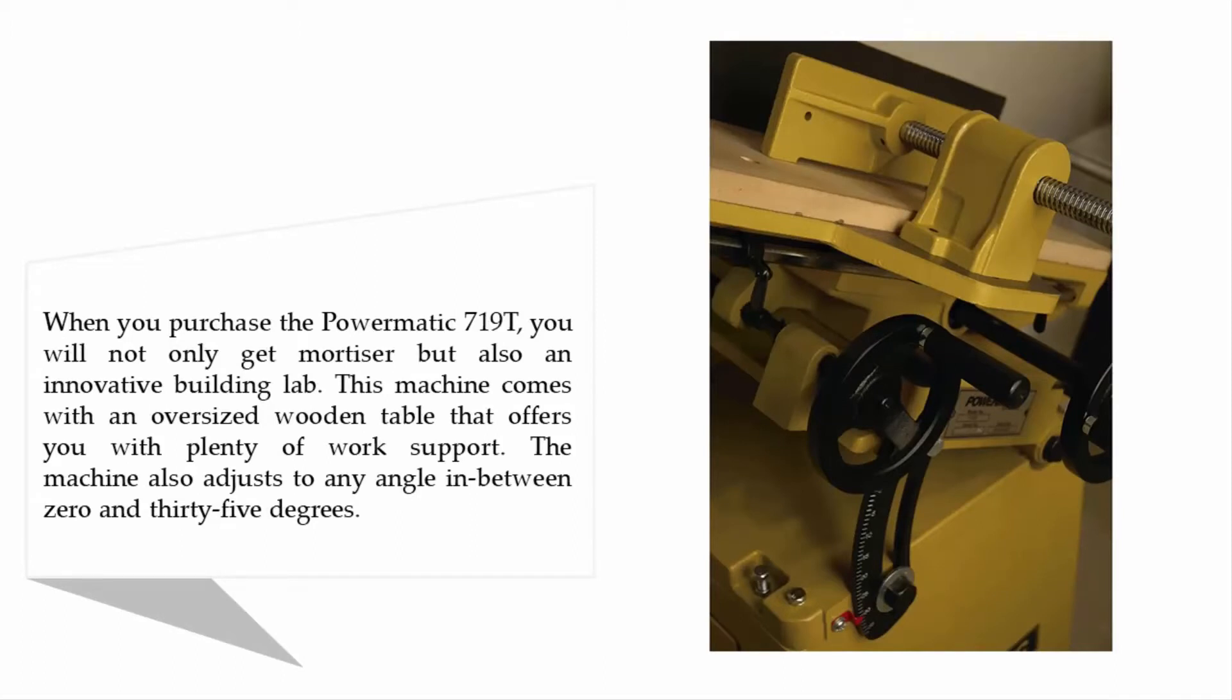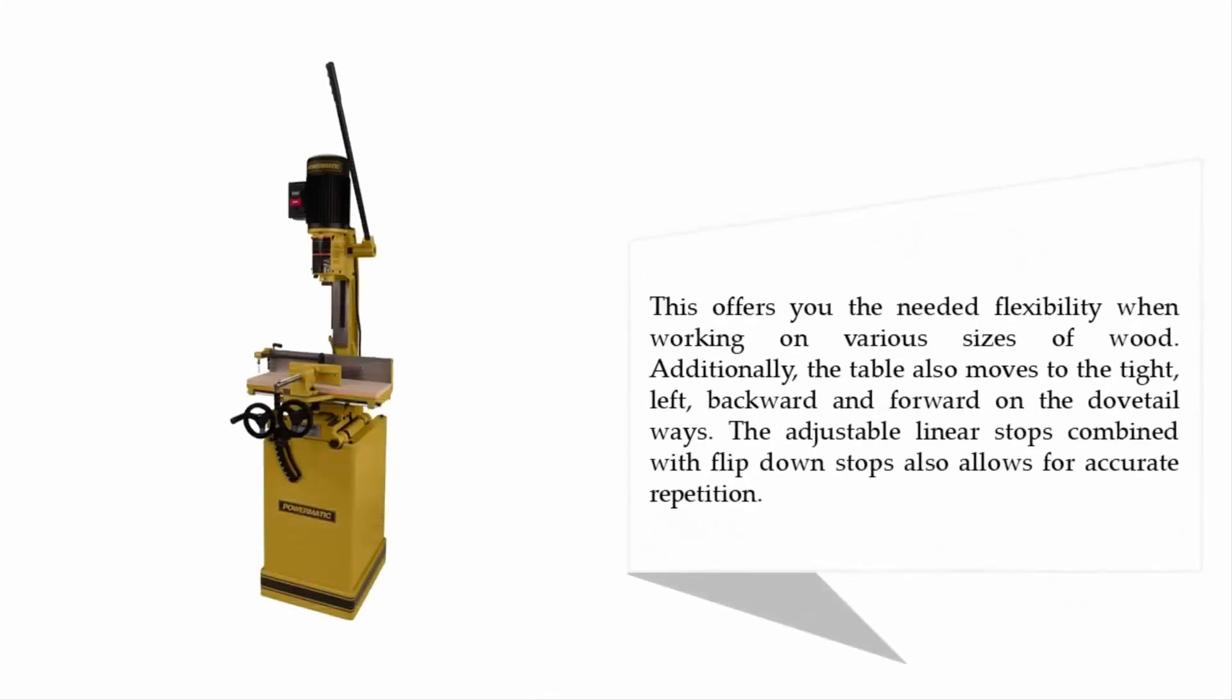This machine comes with an oversized wooden table that offers you plenty of work support. The machine also adjusts to any angle between 0 and 35 degrees, offering you the needed flexibility when working on various sizes of wood. Additionally, the table also moves to the right, left, backward, and forward on the dovetail ways. The adjustable linear stops combined with flip-down stops also allow for accurate repetition.